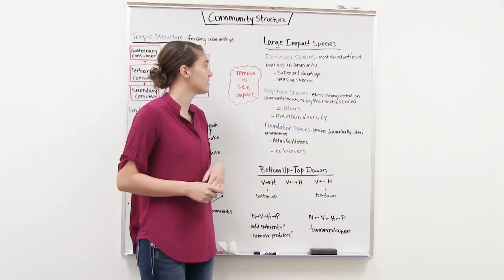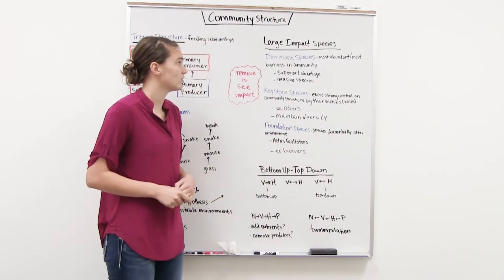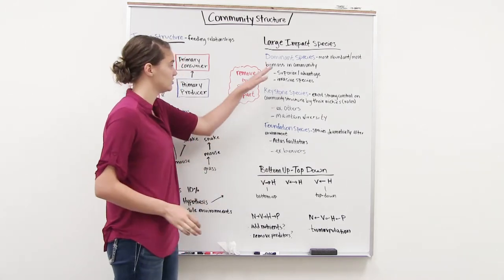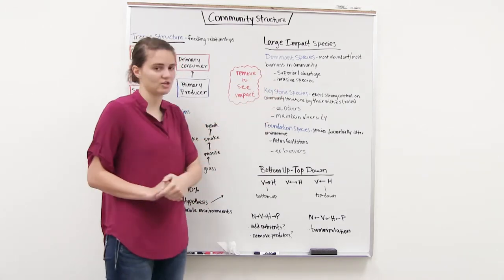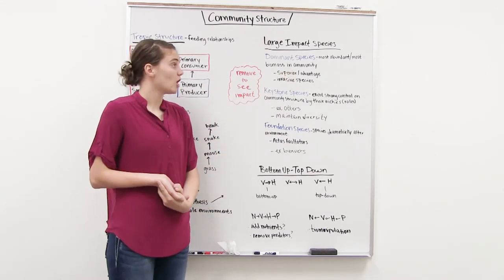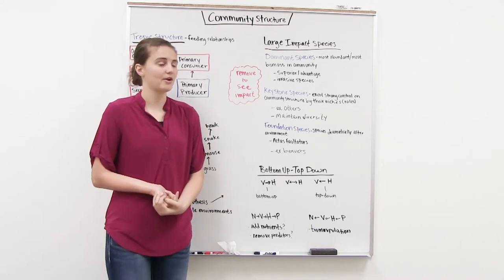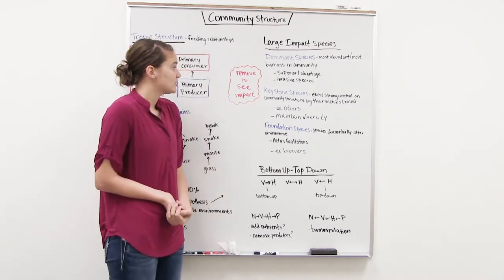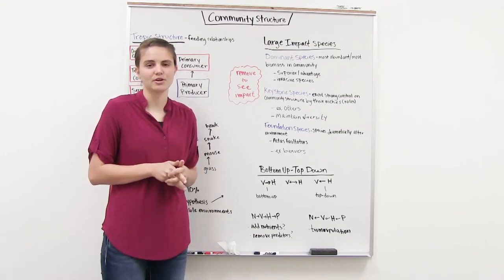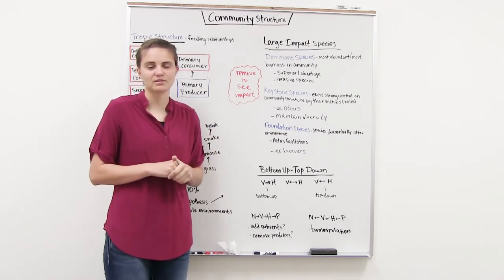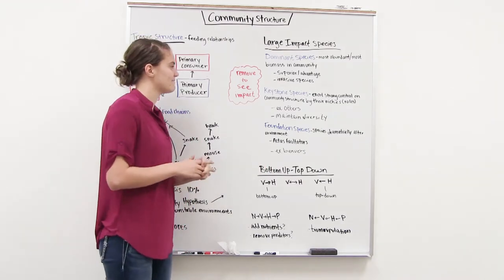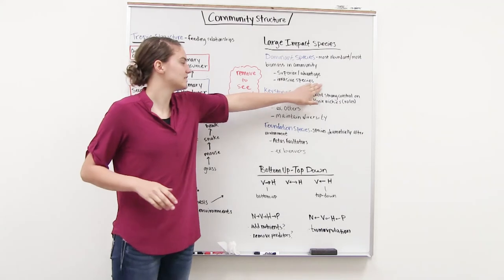Now we're going to look at species that have a large impact on their community and environment — focusing on dominant species, keystone species, and foundation species. Dominant species are the most abundant or have the most biomass in their community. They arise because they have some superior advantage or adaptation that allows them to use resources better and populate the majority of the community.